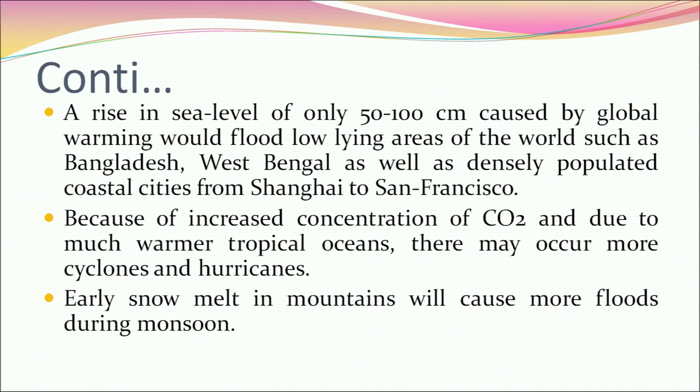A rise in sea level of only 50 to 100 centimeters caused by global warming would flood low-lying areas such as Bangladesh and West Bengal, as well as densely populated coastal cities from Shanghai to San Francisco. Due to increased CO2 concentration and warmer tropical oceans, there may be more cyclones and hurricanes. Early snowmelt in mountains will cause more floods during monsoon.